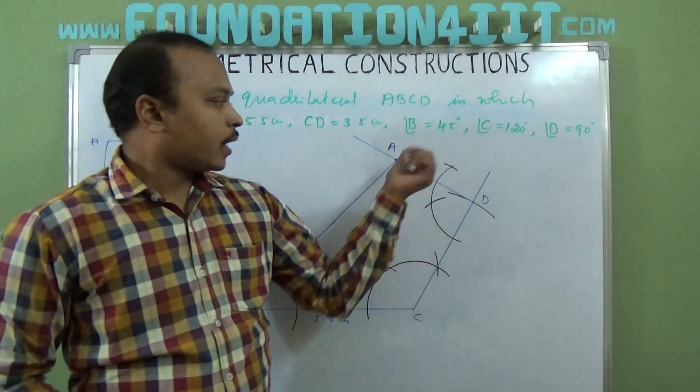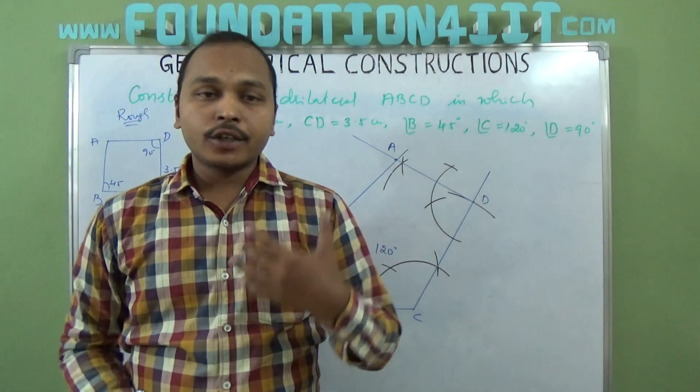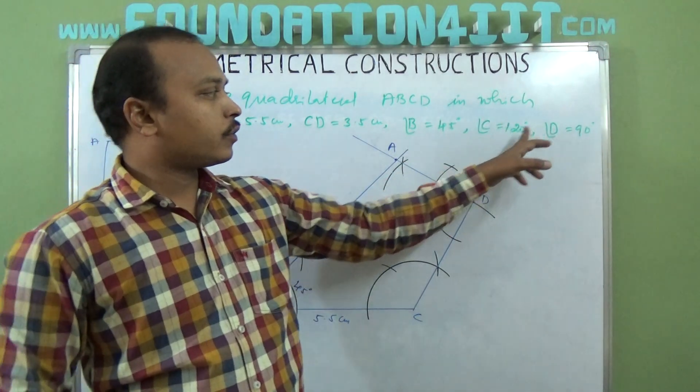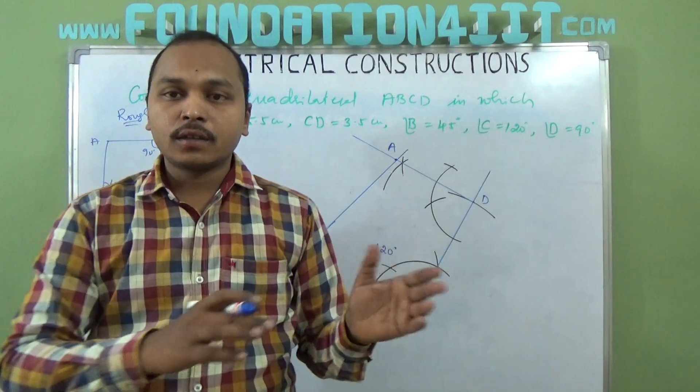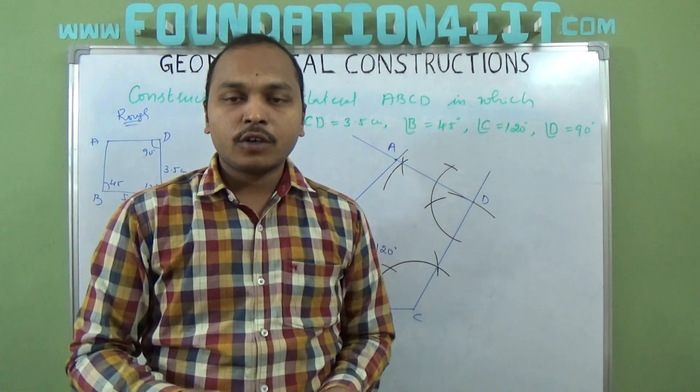Fine. Now this is the construction. Angle A, if you use a protractor, you can verify also. 45, 120, 90—add this sum and subtract from 360. That value is nothing but angle A itself, so you need not find A.